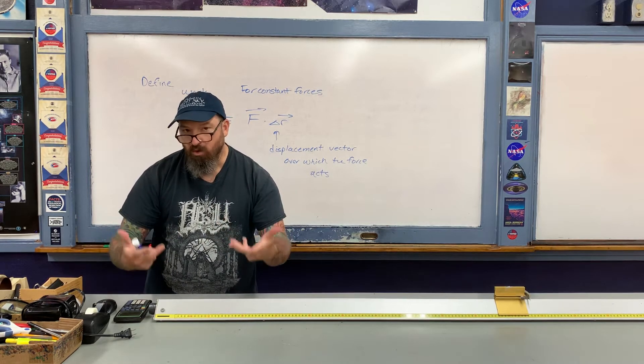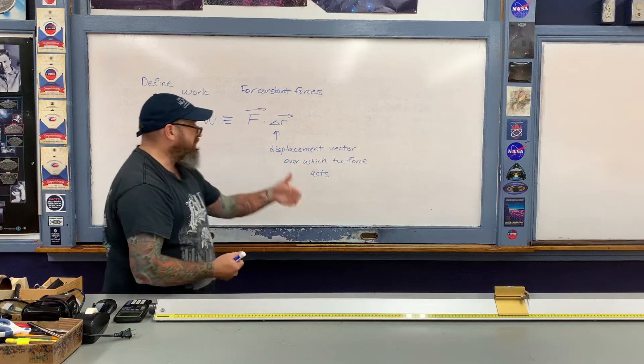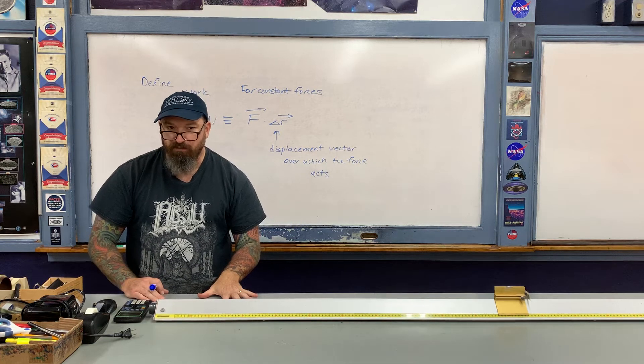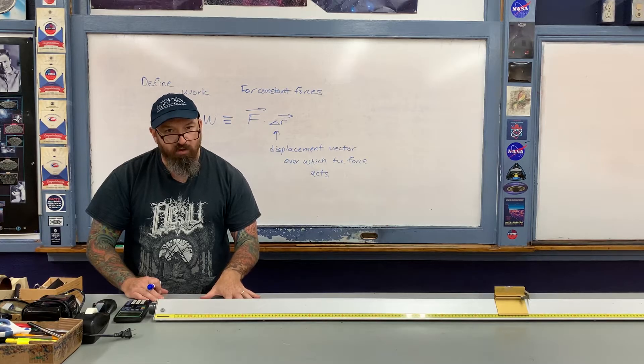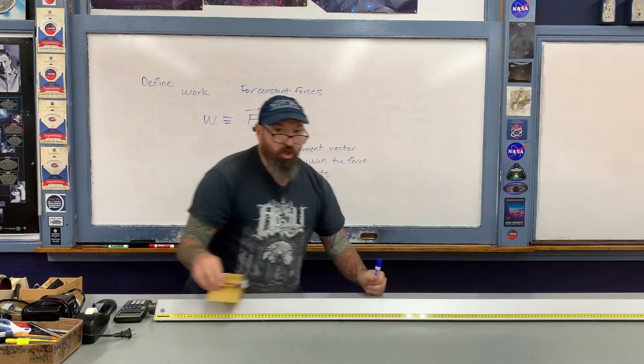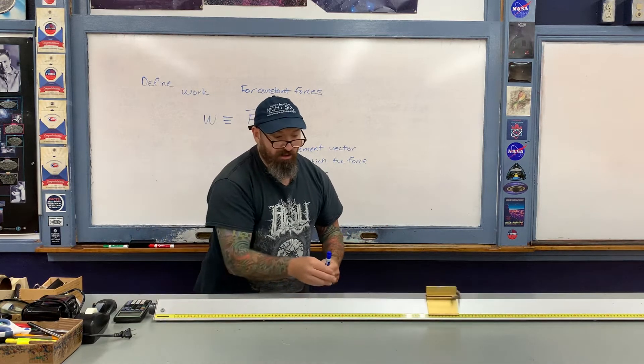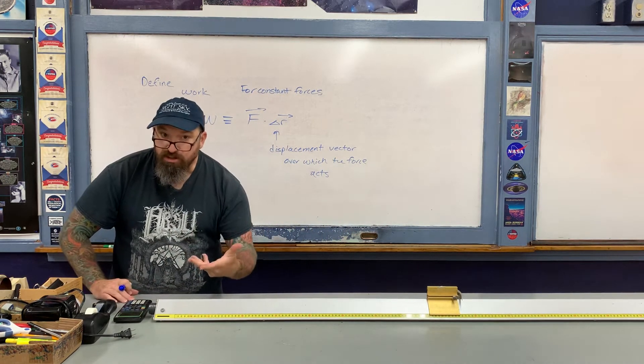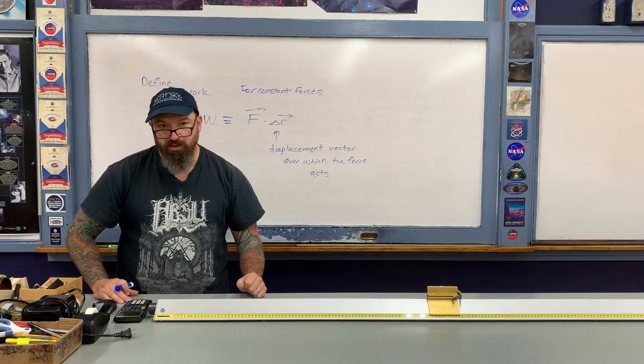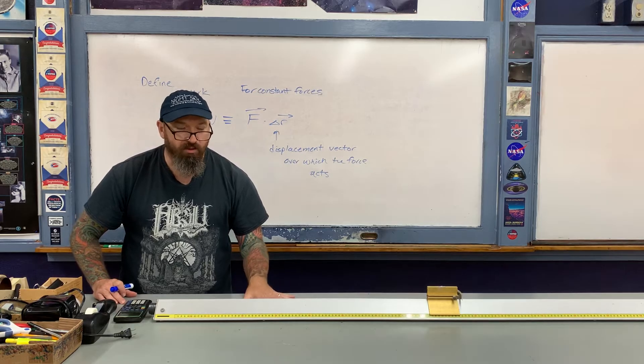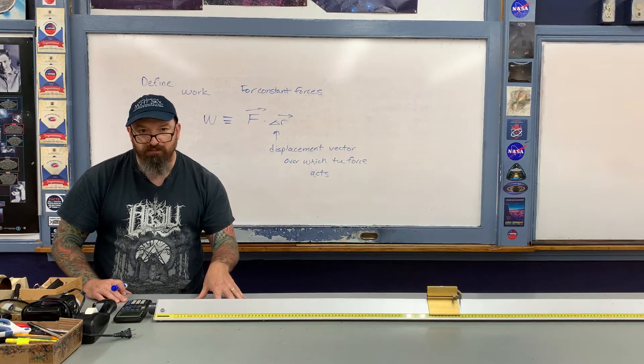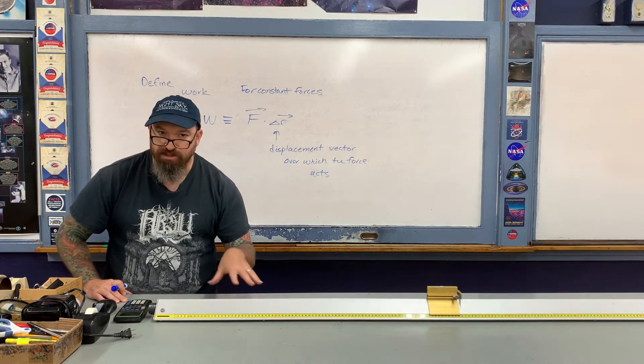As I was doing so, we say I was doing work. The amount of work that I was doing is equal to this mathematical definition here. The displacement vector is the displacement vector over which the force that I am applying acts. Now after I let go of the cart, friction is still working on it as it slides across the surface. However, I am no longer doing work on the object because I am no longer exerting the force on the object.